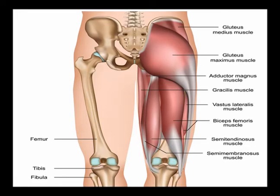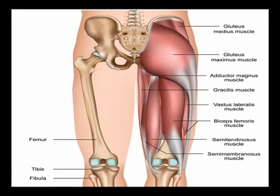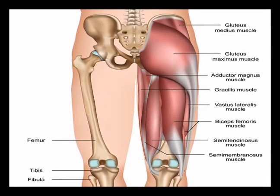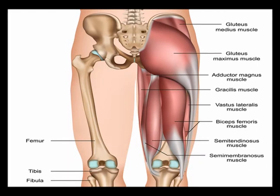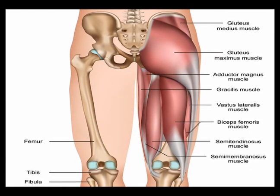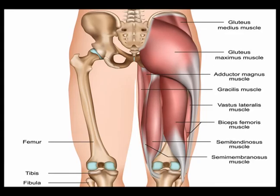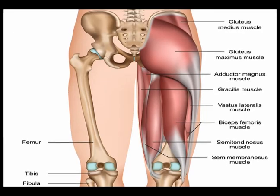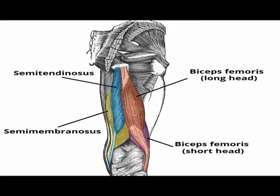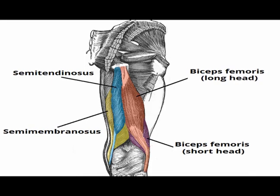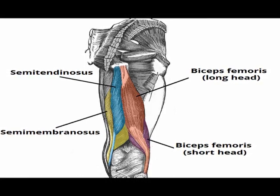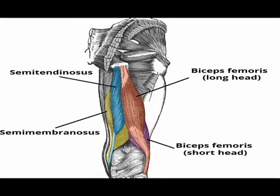The concentric actions of the semimembranosus muscle are hip extension and knee flexion, medial rotation of the tibia when the knee is flexed, and medial rotation of the thigh when the hip is extended. Again, the semimembranosus muscle is a medial hamstring muscle. It crosses two joints — the hip joint and the knee joint.